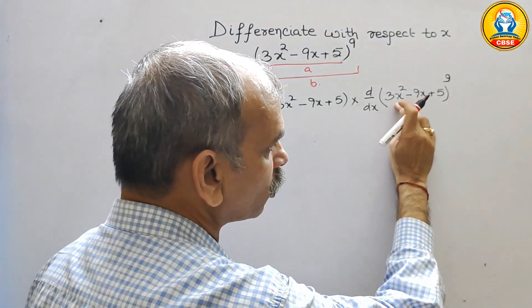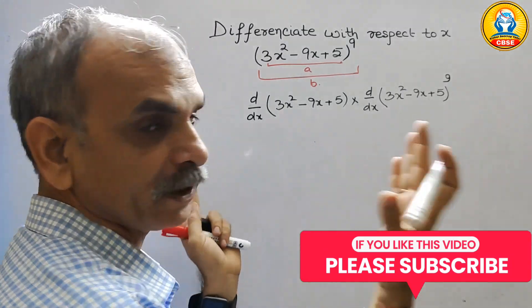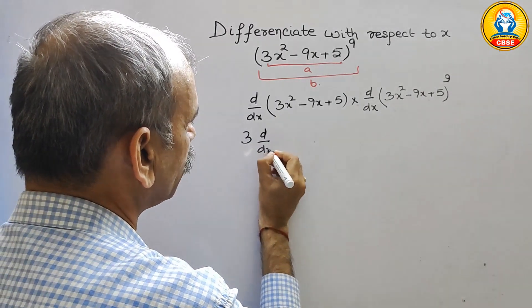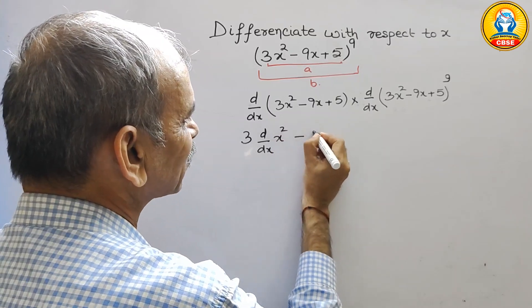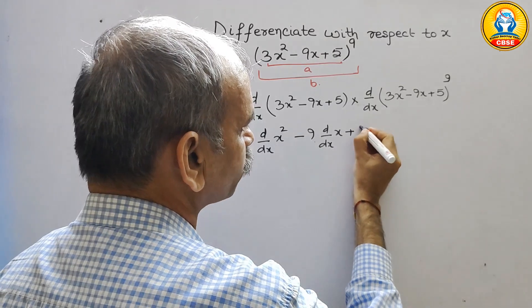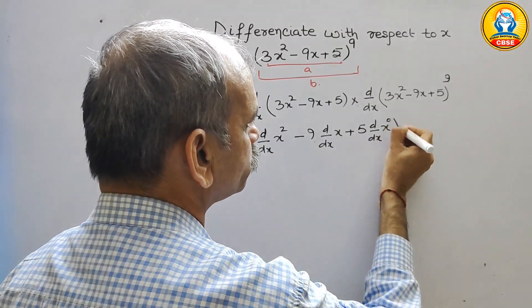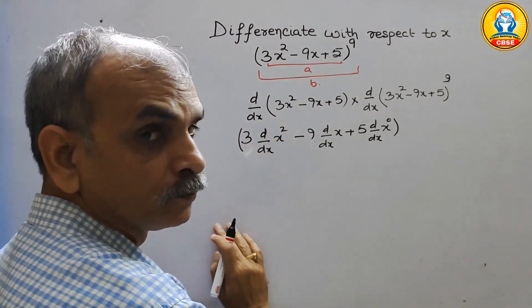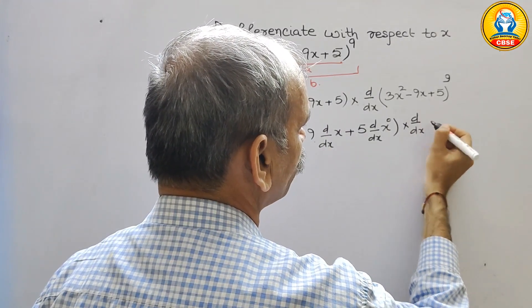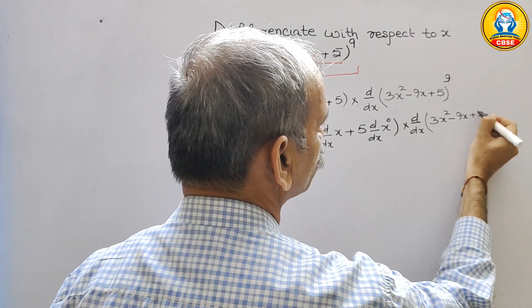In the second one, need not to solve this. Why? Because we are differentiating here. Now here split it. If you split it, this will get 3 d by dx of x square minus 9 d by dx of x. Here comes plus 5, so we will write plus 5 d by dx of x to the power of 0. We will keep in bracket, and next is this into d by dx of 3x square minus 9x plus 5 to the power of 9.